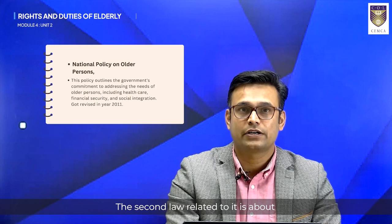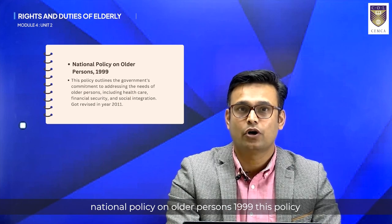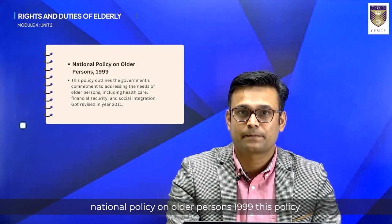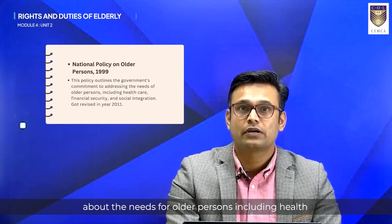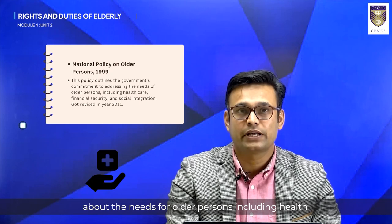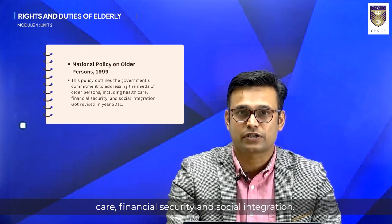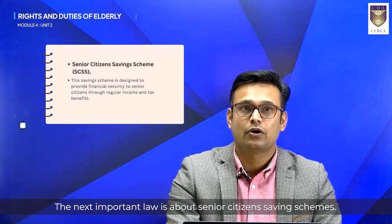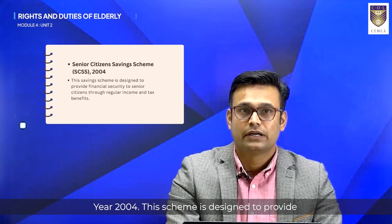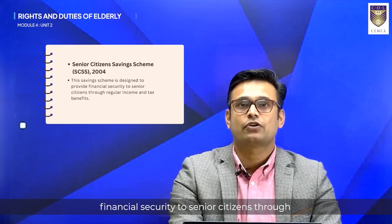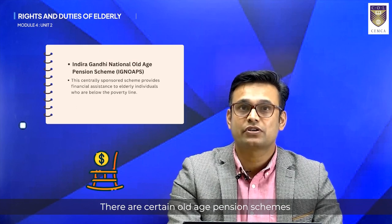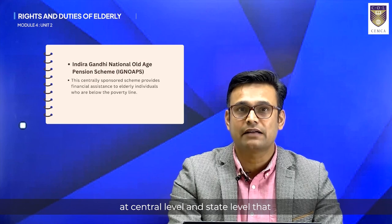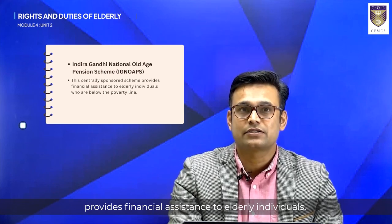The second law is about the National Policy on Older Persons 1999. This policy was revised in 2011 and talks about the needs of older persons including healthcare, financial security and social integration. The next important law is the Senior Citizens Saving Scheme 2004, designed to provide financial security through regular income and tax benefits. There are also old age pension schemes at both central and state levels that provide financial assistance to elderly individuals.